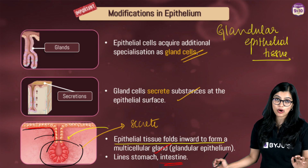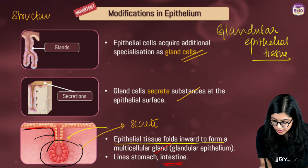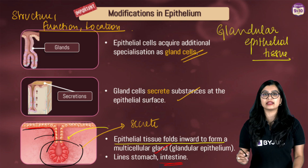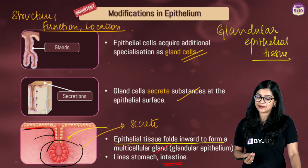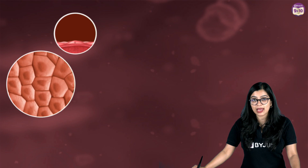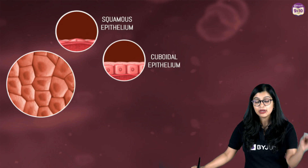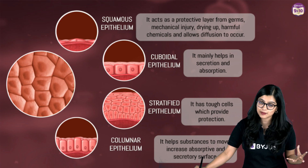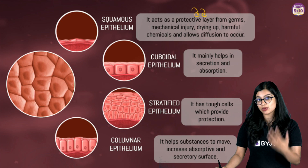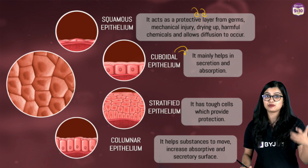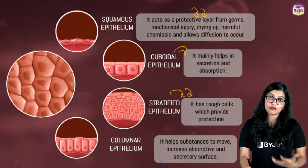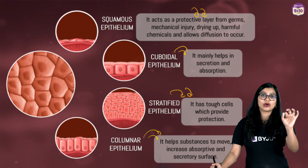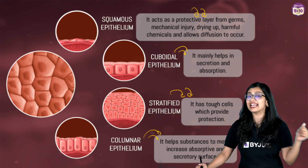When learning about tissues it is important to know each tissue's structure, function, and location — these three together make the concept simple. To summarize: squamous epithelium provides protection and allows diffusion; cuboidal epithelium provides mechanical support; stratified epithelium provides protection from wear and tear; columnar epithelium facilitates absorption. Extensions include ciliated columnar epithelium and glandular epithelium.